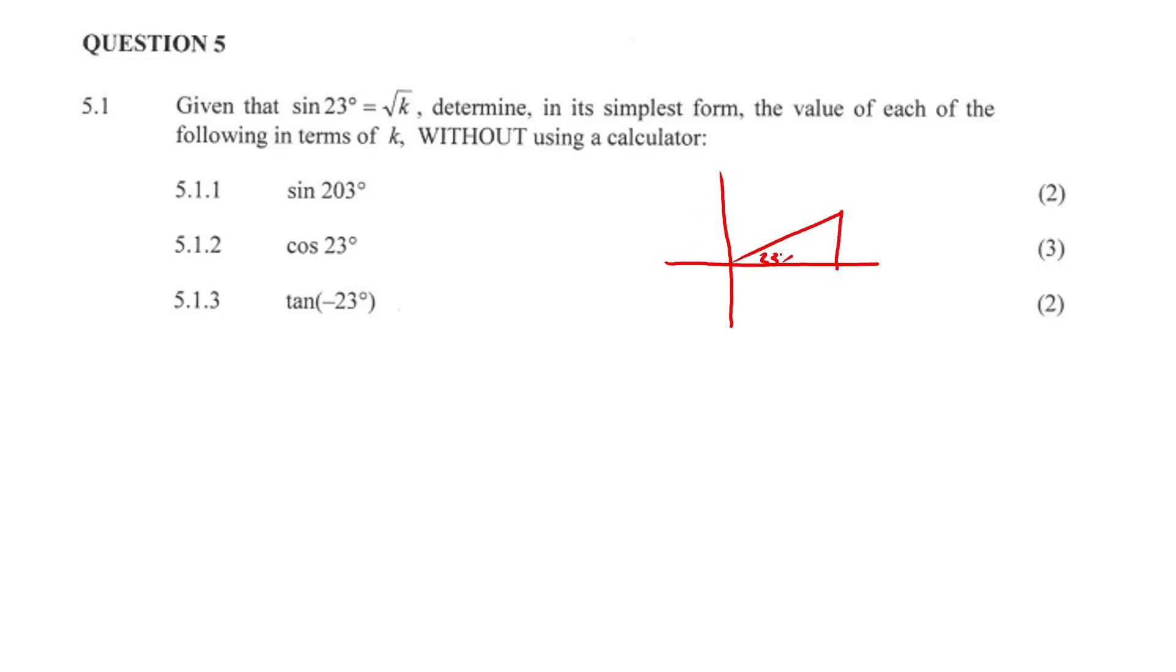23 degrees, and sine has the trig ratio of Y over R. So that means our Y value is going to be root K. Our R value, which is our hypotenuse, is going to be 1. So let's do a bit of Pythag.